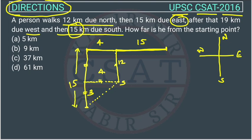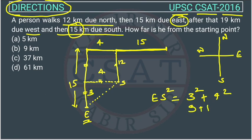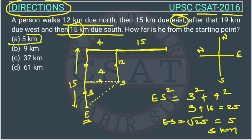Now we simply will use the Pythagoras theorem. This is the end point, so we have to find ES. ES squared will be equal to 3 squared plus 4 squared — so this will be 9 plus 16, which is 25. So ES will be the square root of 25, which equals 5 kilometers. So the answer is option A. In direction questions, as you have seen, we are using the Pythagoras theorem.